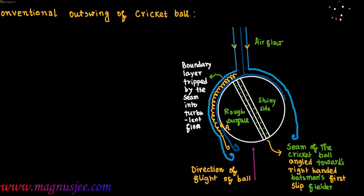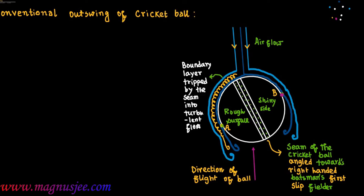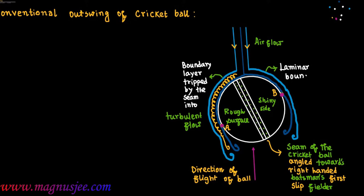The thin layer of air flowing in the backward direction and touching the shiny side or non-seam side of the cricket ball is in laminar state. That means the flow of air is regular over this surface of the cricket ball, and B is the point of separation of this boundary layer from the shiny side. The boundary layer on the non-seam side is the laminar boundary layer.